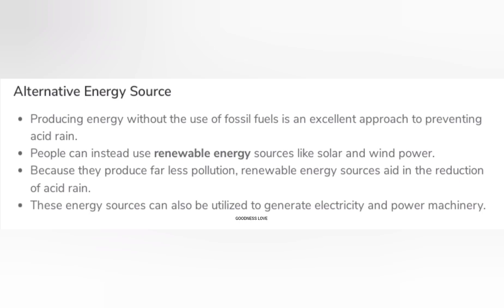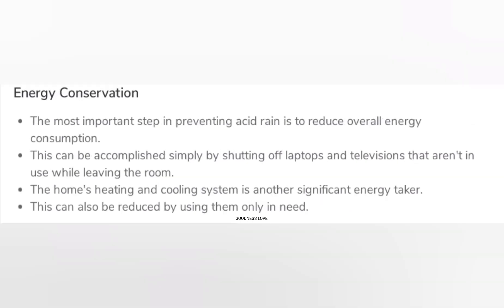Energy conservation: the most important step in preventing acid rain is to reduce overall energy consumption. This can be accomplished simply by shutting off laptops and televisions that aren't in use while leaving the room. The home's heating and cooling system is another significant energy taker, and this can also be reduced by using them only when needed.